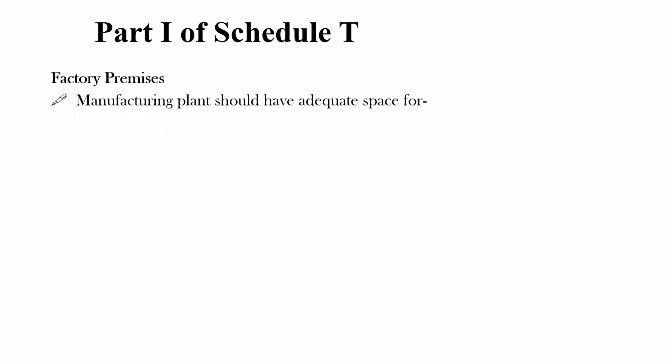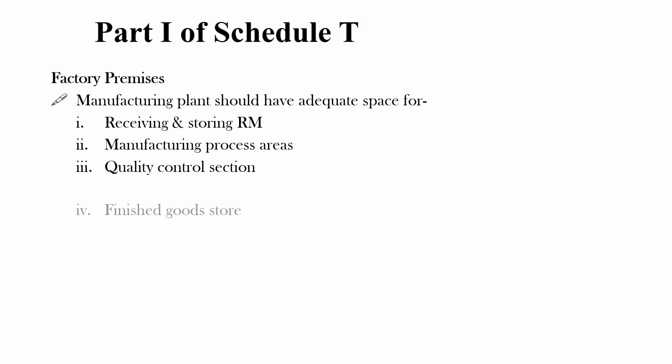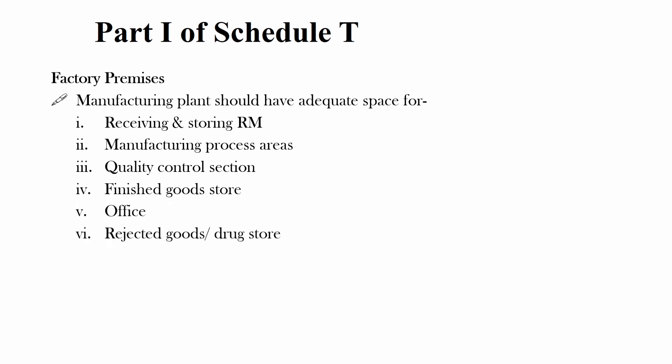Moving to Part 1 of Schedule T. Part 1 is about factory premises. It states that the manufacturing plant should have adequate space for receiving and storing raw materials, adequate space for manufacturing processes and the quality control section, adequate space for finished goods store, for office, and for rejected goods or drug store.